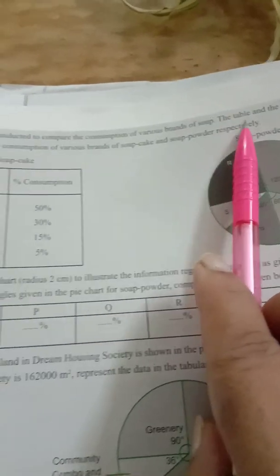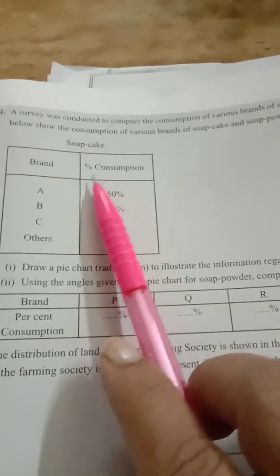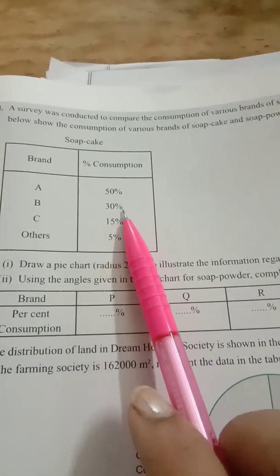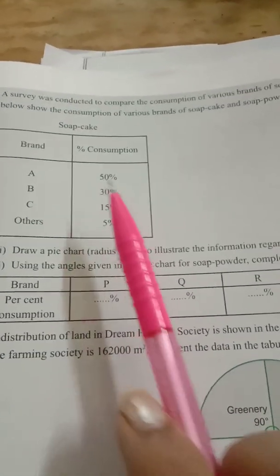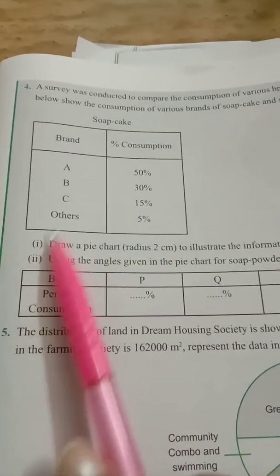First we'll start with soap cake. Brand A, B, C, and others have percentage of consumption 50%, 30%, 15%, and 5%. Now there are two things: soap cake and soap powder, so part 1 is for soap cake and part 2 is for soap powder.